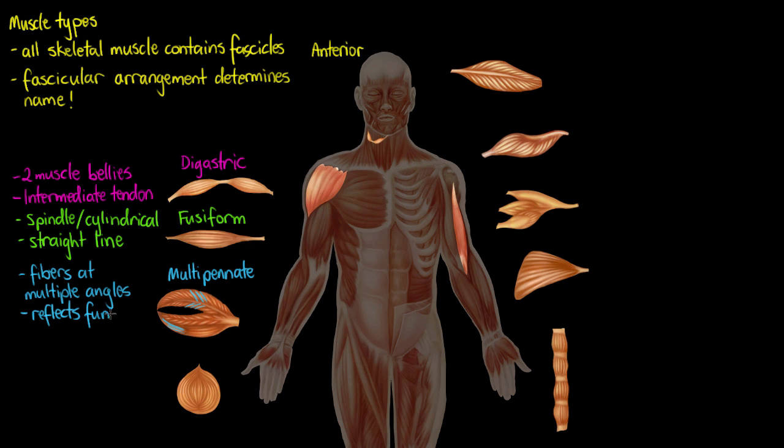That reflects the muscle's function. If we remember back to our fusiform muscle, the fibers are going in one single direction, which reflects the fact that the bicep is really only flexing. But with our deltoid, all these fibers going in separate directions reflects the fact that this muscle is going to be supporting our most freely movable joint in the body — the ball and socket glenohumeral joint of the shoulder. That's how form has to reflect function.